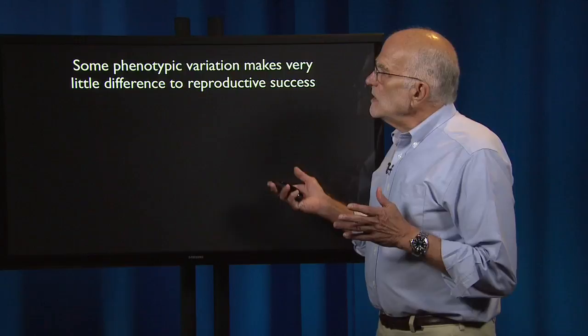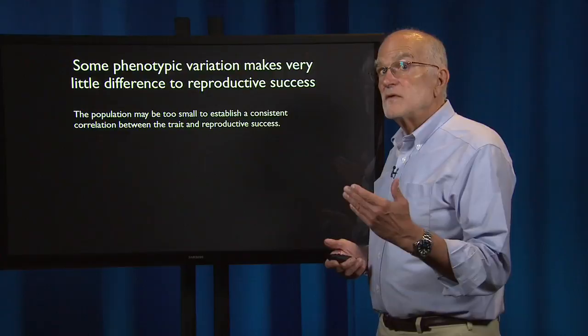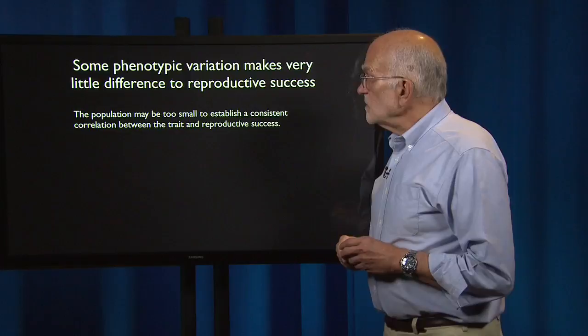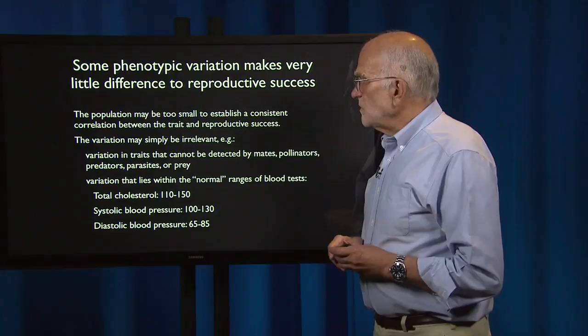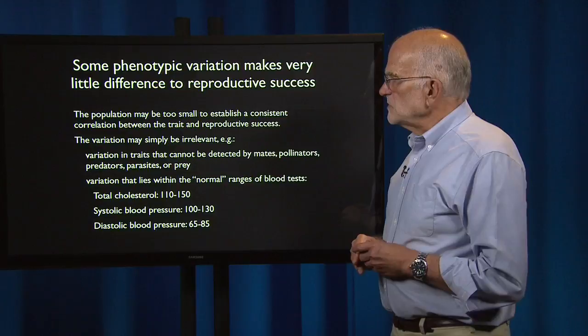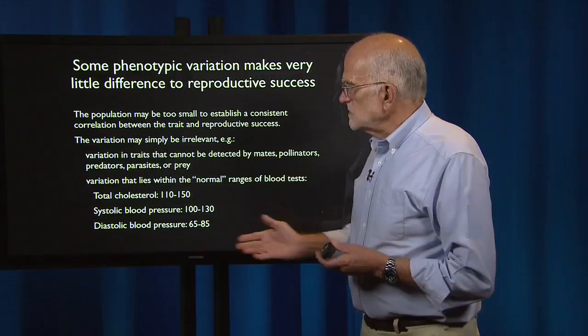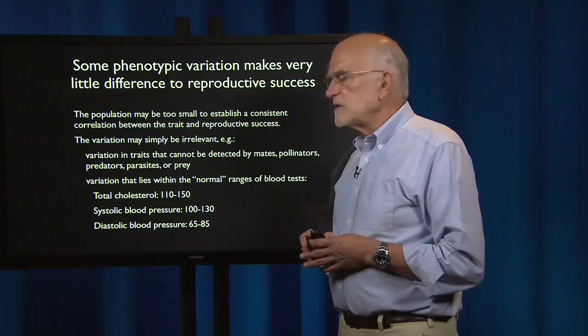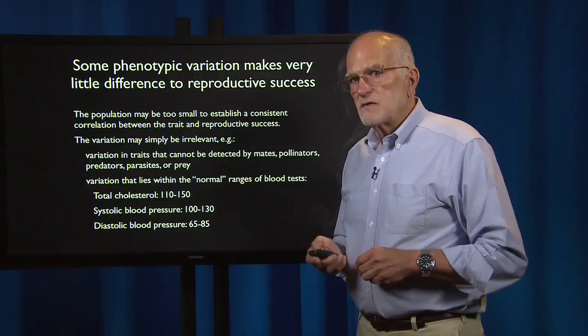Another reason for neutrality is that some phenotypic variation makes very little difference to reproductive success. The population may be too small to establish a consistent correlation between a trait and reproductive success — that is a sampling issue. Or the variation may simply be irrelevant, for example, variation in traits that can't be detected by mates, pollinators, predators, parasites, or prey. Or variation that lies within normal ranges of blood tests — if total cholesterol is between 110 and 150, systolic blood pressure between 100 and 130, or diastolic blood pressure between 65 and 85, anything within that range is unlikely to be affecting reproductive success much.